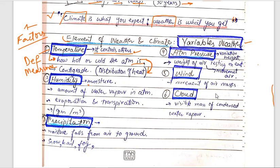The second factor is humidity. Humidity is basically moisture in the atmosphere. The amount of water vapor in the atmosphere is called humidity. Evaporation and transpiration — water turning into vapor from water bodies and leaves — contributes to humidity. Water vapor mixes with other gases in the air and this is measured per cubic meter.